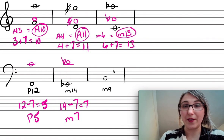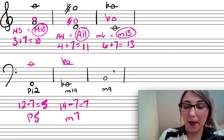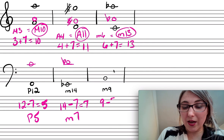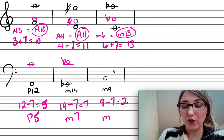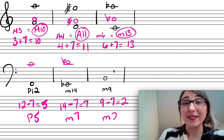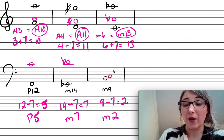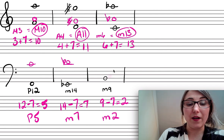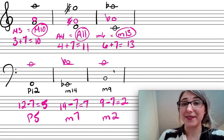One more: a minor ninth. 9 minus 7 equals 2, so it's a minor second plus an octave. A minor second above B is C, and an octave above that is the C — there it is.